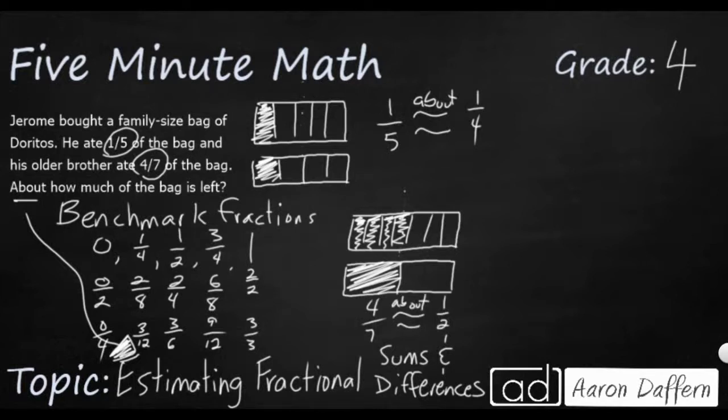See, now I could use this. So Jerome, let's put Jerome over here. Let's say Jerome, he ate about, I'm going to put one-fourth. His older brother, I'm going to make him a little bit bigger. Big brother ate about one-half.